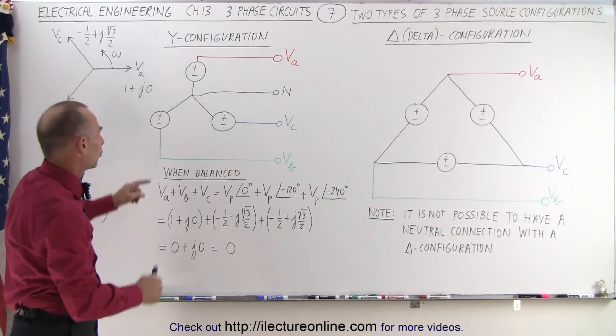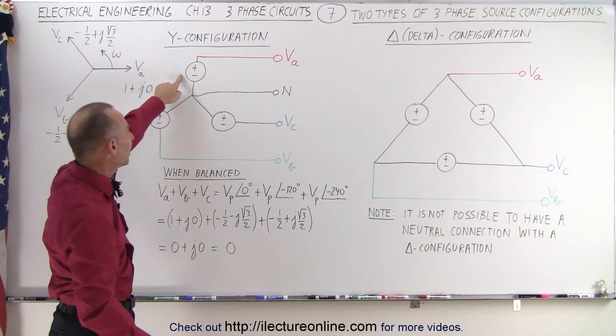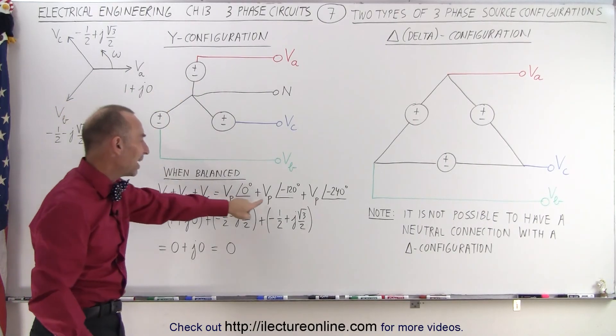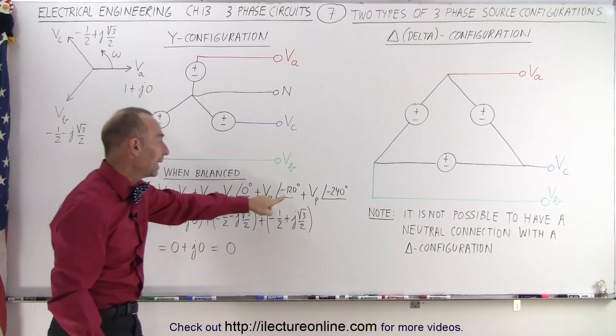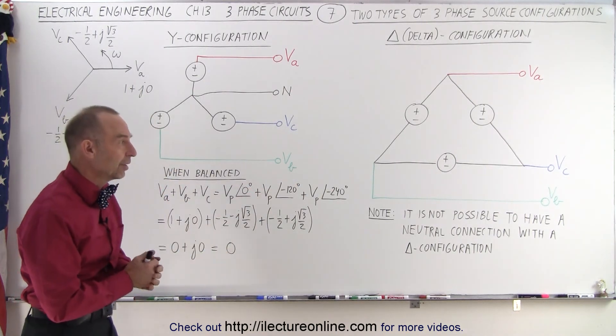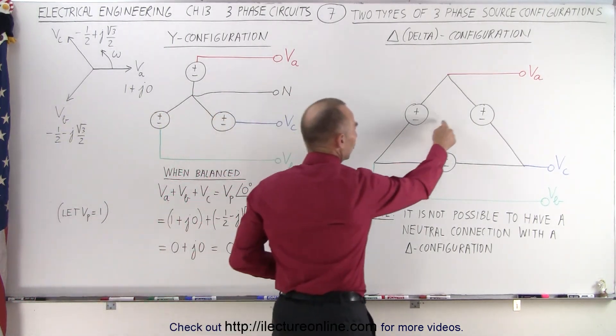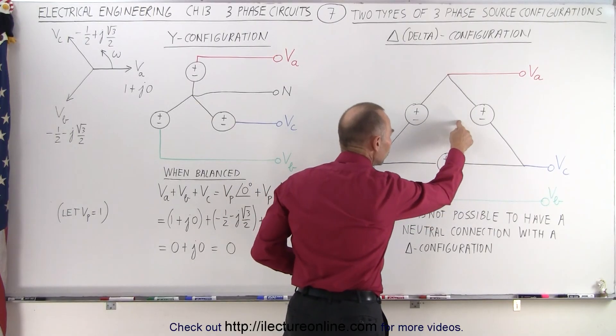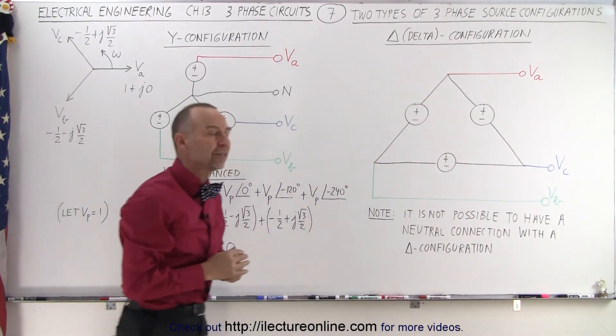But here we want to talk about the sources. Notice we have the three sources. They all will have the same phase voltage, but they will be at a different phase, 120 degrees apart. Same over here. These three sources will have the same phase voltage, but they'll be 120 degrees apart.